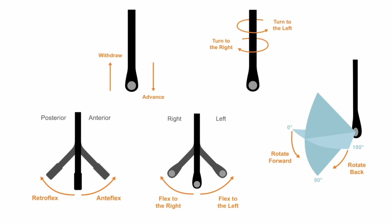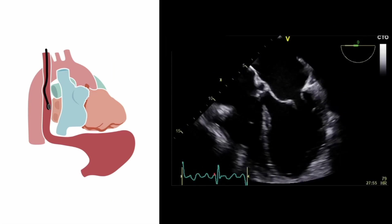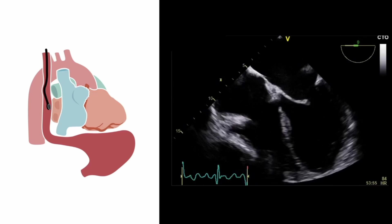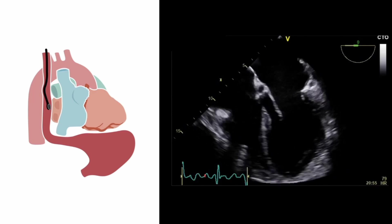Similarly, it may be necessary to turn the TEE probe to the patient's right or left in order to sweep across the heart. We may need to adjust the position of the tip of the probe either by anti-flexing or retroflexing the tip, or by flexing the tip to the right or to the left. Finally, we can also rotate the transducer imaging plane to obtain different cuts or slices through the heart at each different probe position.